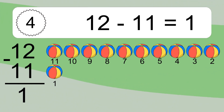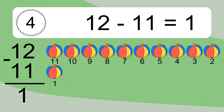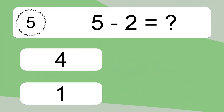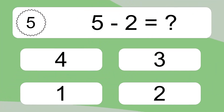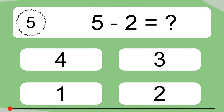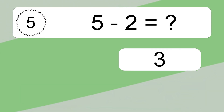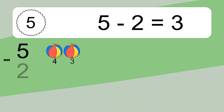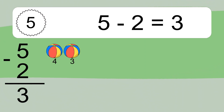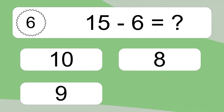12 minus 11 equals what? 7, 6, 5, 4, 3, 2, 1. 5 minus 2 equals what? 5 minus 2 equals 3. Let's count it: 4, 3.